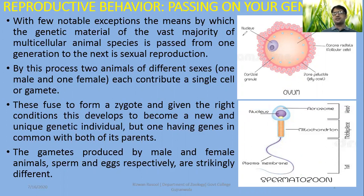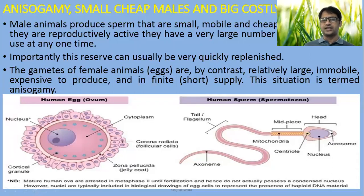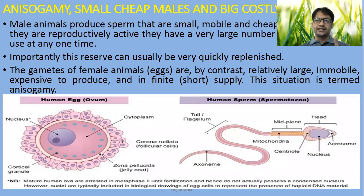Male gametes are smaller and cheap because they are produced in large quantities. Female gametes are costly because they are not produced in large quantities. With large numbers produced, male gametes are usually available at all times in the animal kingdom, but female gametes are available only during specific times in most cases. Female gametes are, by contrast, very large, immobile, and expensive to produce — they require more time and energy. They are available in finite, limited supply during a specific time period. This situation is termed anisogamy: two different gametes with different qualities, characteristics, and availability.